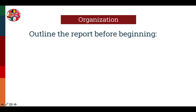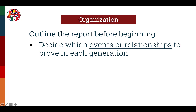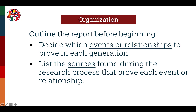First, decide which events or relationships to prove in each generation. Next, list the sources found during the research process that prove each event or relationship, keeping in mind that some sources will likely be used more than once throughout the report.